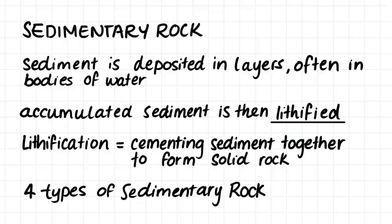The next type of rock we will have a look at is sedimentary rock. Sedimentary rock forms from layers of sediment which are deposited on the earth's surface, most commonly in bodies of water. This sediment can be anything from mud to sand all the way up to pebbles, and this sediment accumulates in layers which then becomes buried deep below the earth. This sediment is then cemented together in a process called lithification. Lithification involves cementing the sediment together to form solid rock. There are four main types of sedimentary rock which all form from the cementing of different types of sediment.